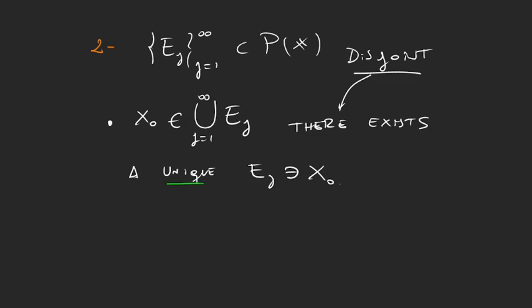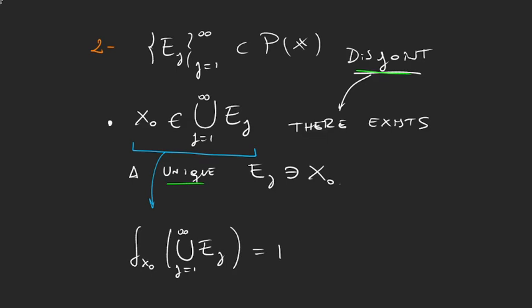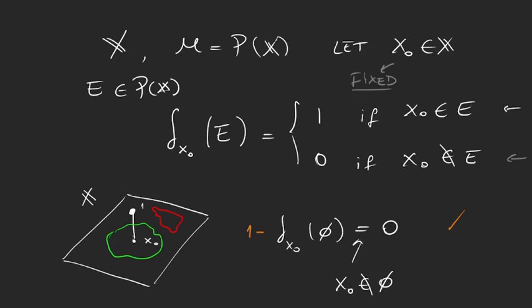And now we said that x₀ is in the union. So from this we get that the measure of the union, delta x₀ of the union, is 1 because the union of E sub j is just another set that has the element x₀. And from the definition, here we have that if the set contains x₀, then the measure is 1.